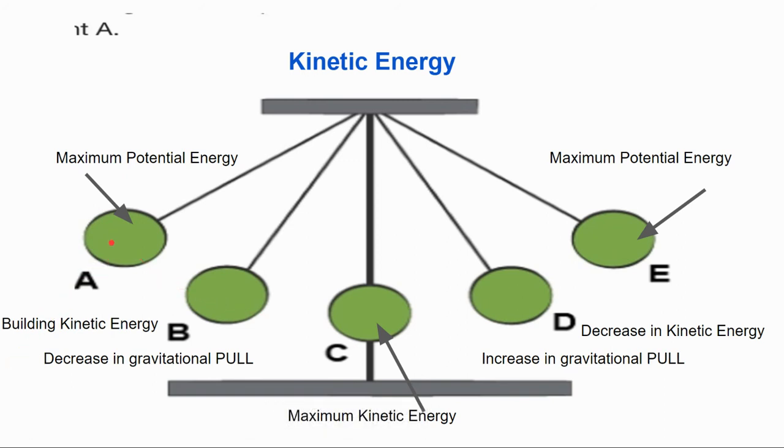So maximum potential energy here at A. As I swing down, I'm building kinetic energy. There's a decrease in the gravitational pull. I reach my maximum kinetic energy. As I start swinging back up, there's an increase in the gravitational pull and I'm starting to run out of that kinetic energy until I reach a point where gravity won't let me go anymore and now I've reached my maximum potential energy. And I go back in the other direction where I build my kinetic energy, I reach my maximum, gravity pulls on me, and then I get to my other point where maybe right about here I'm at my maximum potential energy, getting ready to swing the opposite direction.